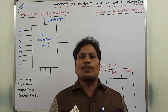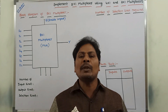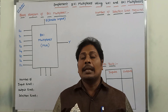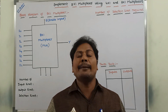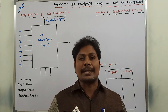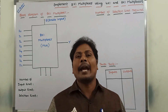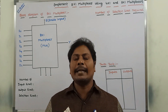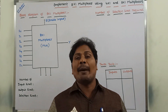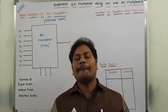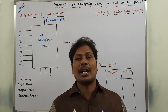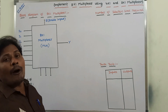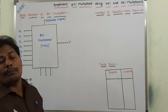Hi friends, welcome back to our YouTube channel. Today we have to discuss about how to implement an 8 by 1 multiplexer using a 4 by 1 multiplexer and a 2 by 1 multiplexer. This can also be asked as: implement an 8 by 1 multiplexer using lower order multiplexers. The lower order multiplexers for an 8 by 1 multiplexer are the 4 by 1 and 2 by 1 multiplexers.